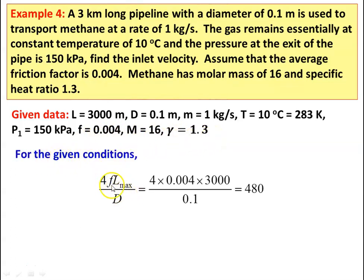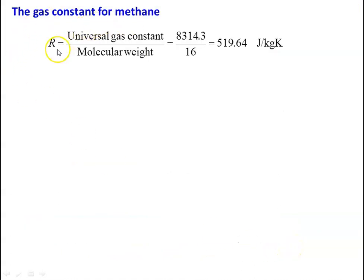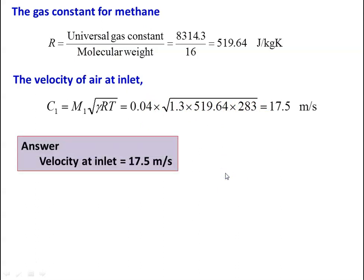For the given condition: 4FL_max/D = 4 × 0.004 × 3000 / 0.1 = 480. From isothermal table 7.1 for gamma = 1.3, page 93, the Mach number corresponding to 4FL_max/D = 480 is M1 = 0.04. Gas constant for methane: R = 8314.3 / 16 = 519.64 J/(kg·K). Velocity at inlet: C1 = M1 × √(γRT) = 0.04 × √(1.3 × 519.64 × 283) = 17.5 m/s. Answer: velocity of gas at inlet = 17.5 meters per second.